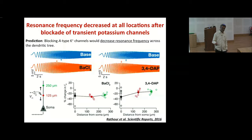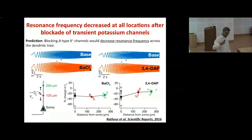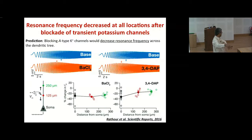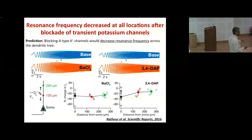As a consequence of the increased input resistance upon A-type potassium channel block, firing frequency also increased across the entire somatodendritic structure. For resonance frequency, the model predicted a decrease, and indeed blocking A-type potassium channels reduced resonance frequency regardless of which blocker was used. So the computational predictions, constrained by electrophysiological measurements, were confirmed by another independent set of electrophysiological experiments.